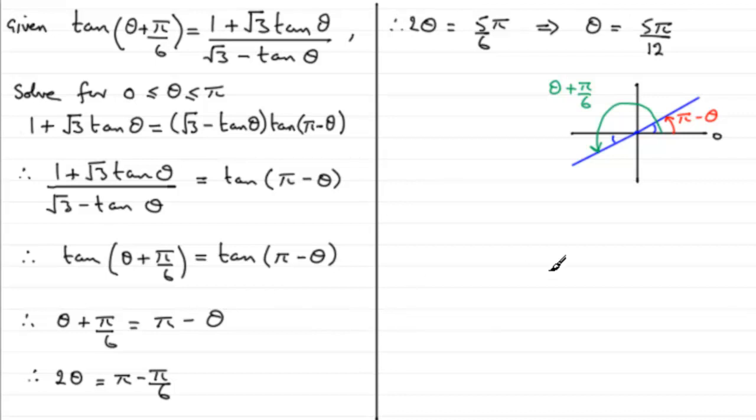But here's the good bit. If I was to add pi to this angle, pi minus theta, it would take me half a turn all the way round to this one here. In other words, if I add pi to pi minus theta, it must also give me the same value as theta plus pi upon 6 if I did the tan of it.